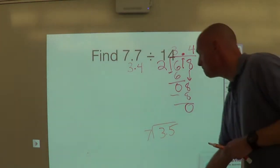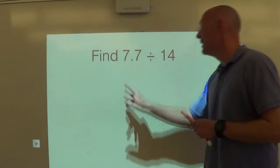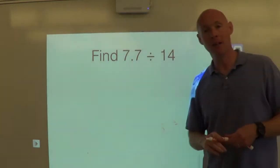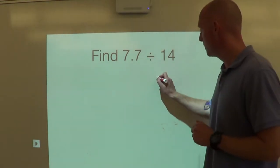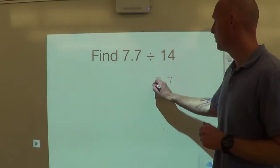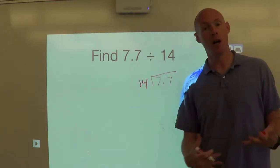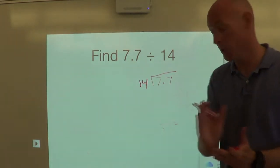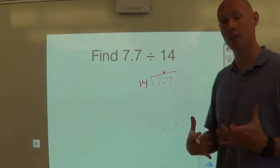This one here. 7.7 divided by 14. You know how to set it up? 7.7 on the inside, 14 on the outside. Awesome. Step one done. Step two, take that decimal, bring it up to the quotient. Awesome.